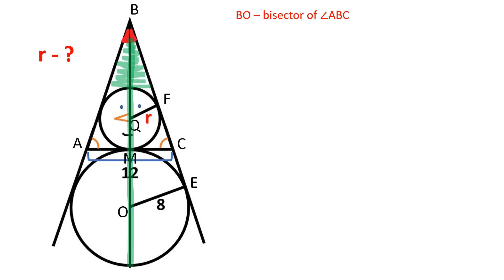Let's draw the bisector of angle ABC. The centers of both circles will lay on the bisector because the sides of the triangle are equidistant from the center of a circle.